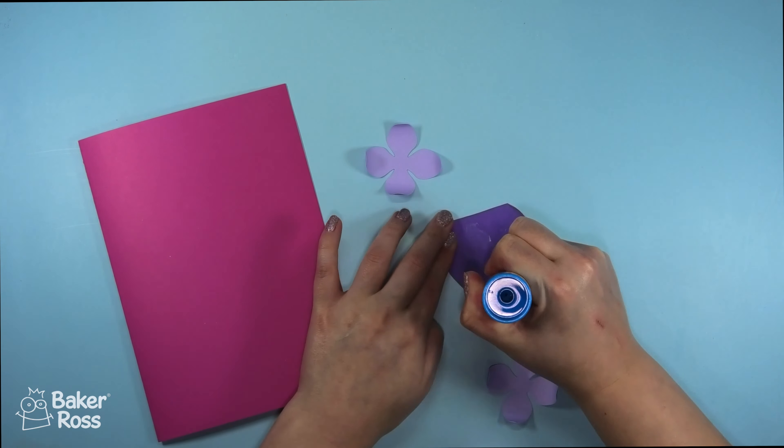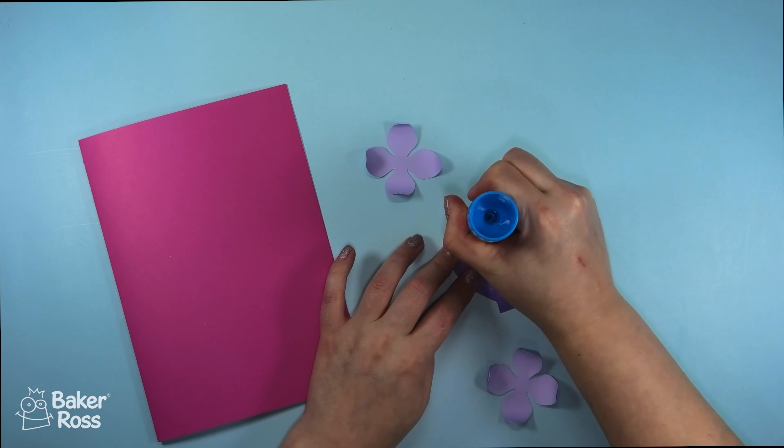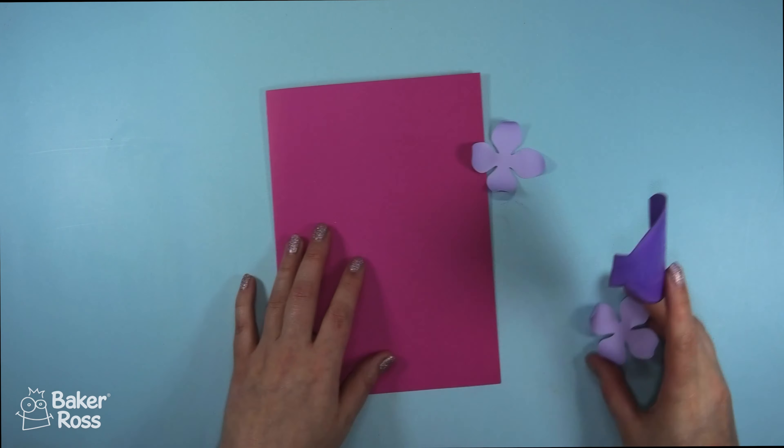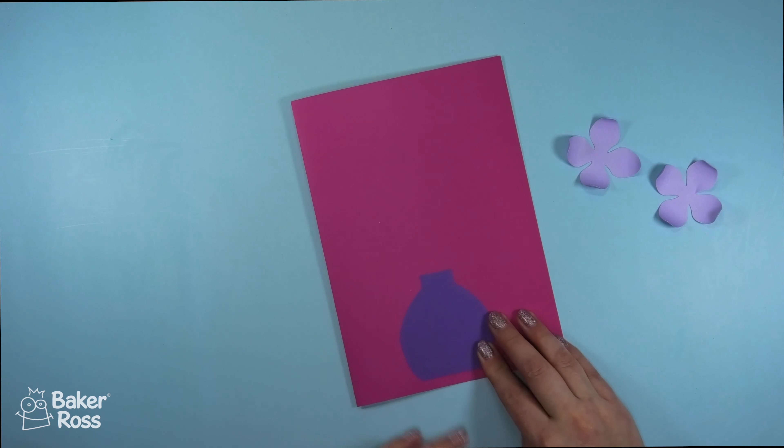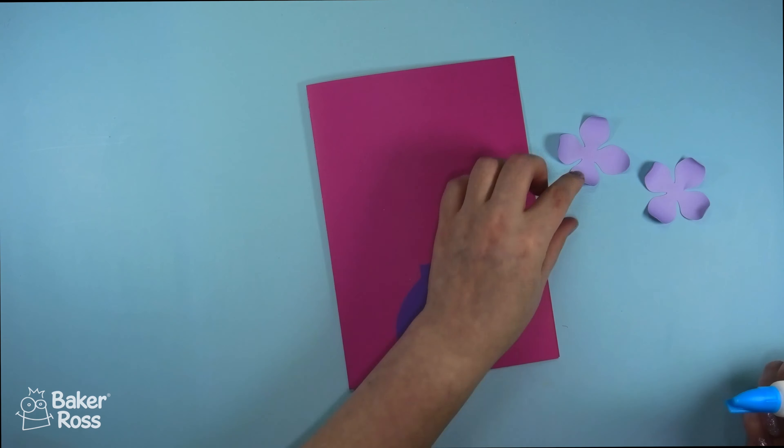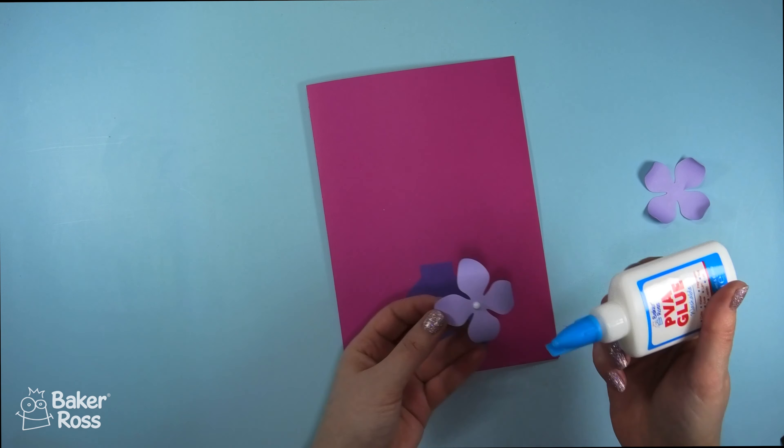Now it's time to assemble the card. Using a glue stick I'll go ahead and add the vase first of all. Then I'm going to use some PVA glue to layer up the flowers. I'll be using two of those shapes per flower and I'm adding three flowers in total to this card.